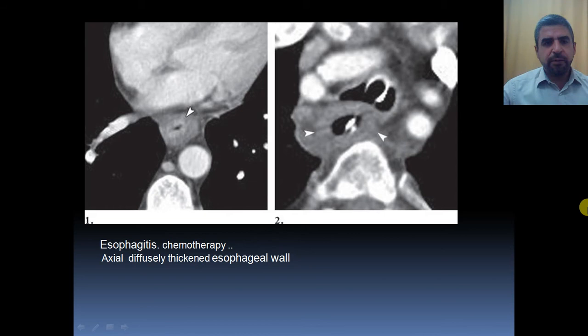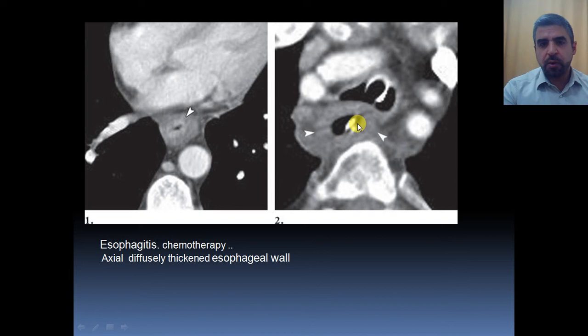For example, you can see here the esophagus of a patient suffering from esophagitis post-chemotherapy, showing markedly thickened wall and thick enhancing mucosa as a result of inflammation. Another case of esophagitis shows the marked wall thickening and mucosal enhancement or increased attenuation.